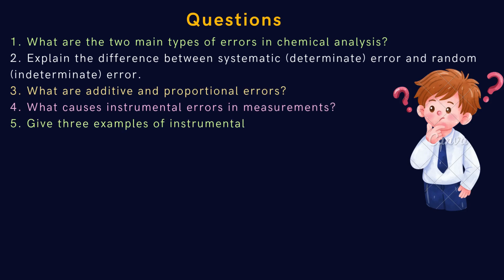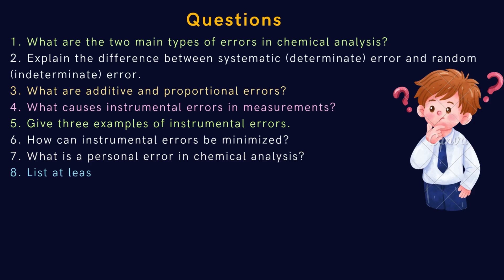Fourth, what causes instrumental errors in measurements? Fifth, give three examples of instrumental errors. Sixth, how can instrumental errors be minimized? Seventh, what is a personal error in chemical analysis? Eighth, list at least three examples of personal errors in the laboratory.